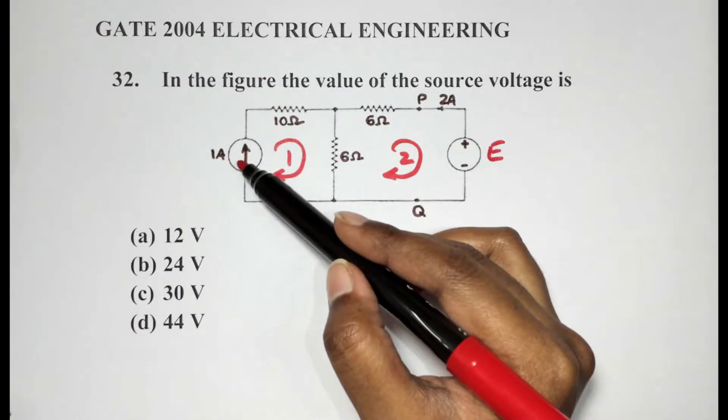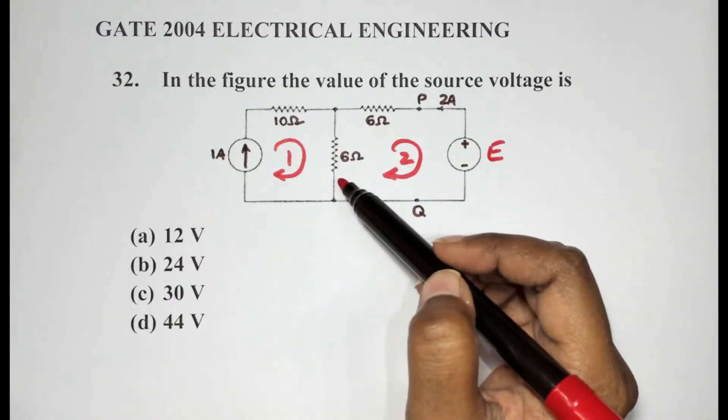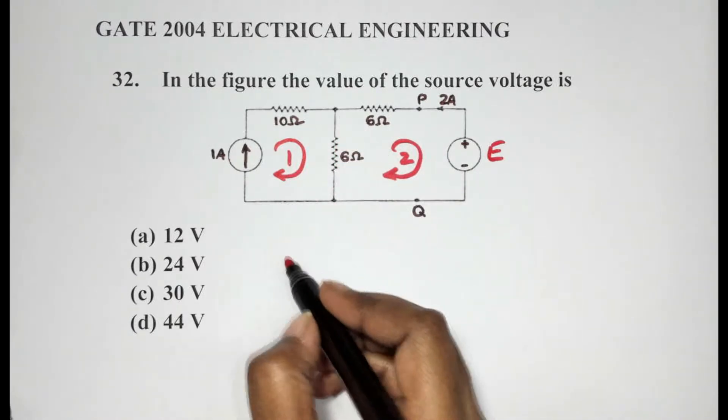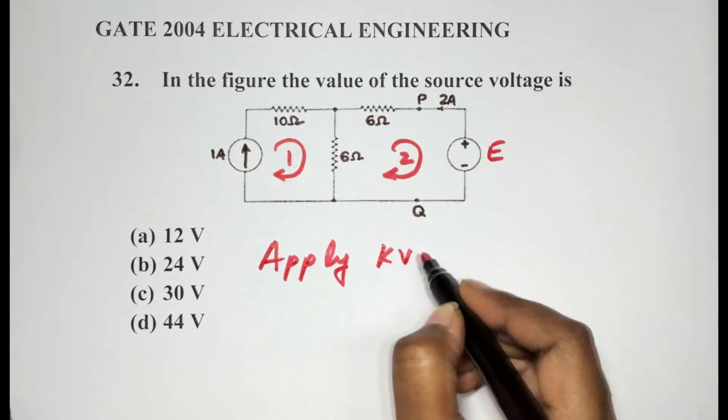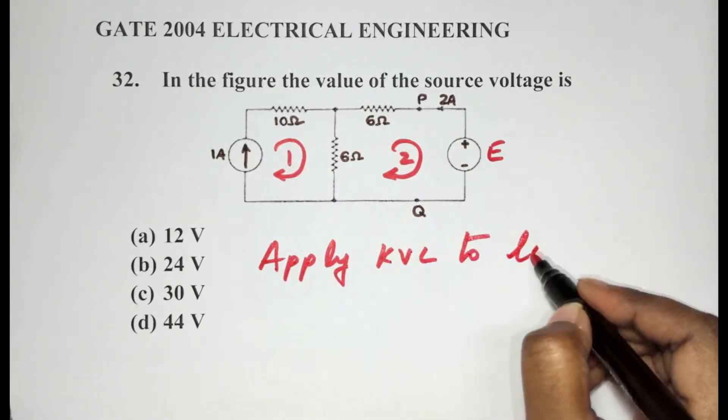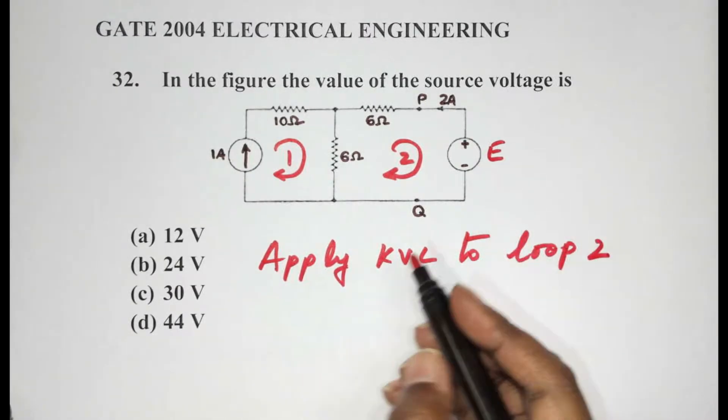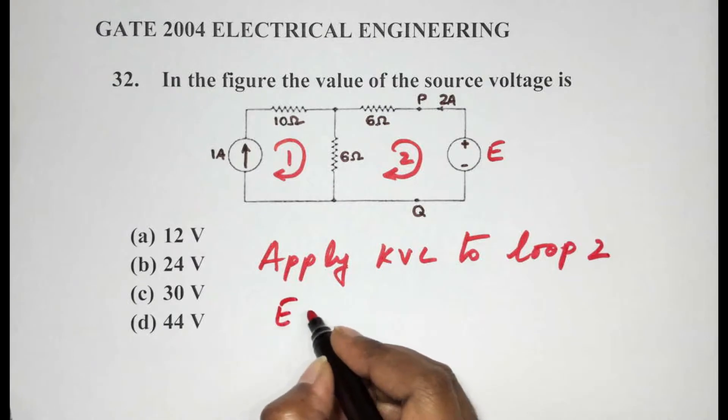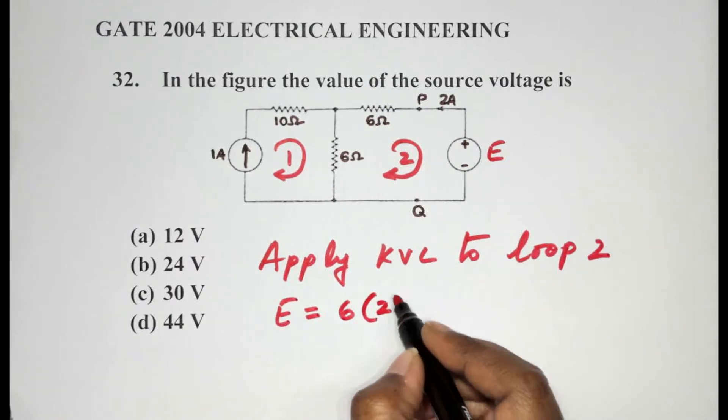So let's now apply KVL to loop 2. Okay, so we start with the source E is equal to 6 times 2—that is the voltage across this resistor here, 6 times 2.